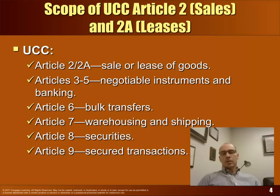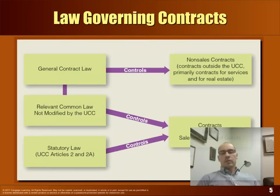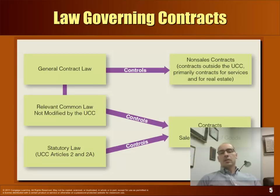The UCC Article 2 and 2A covers the sale and lease of goods. You can see other articles — some of these we will address in other chapters in Business Law 2. We'll talk about negotiable instruments and banking, and securities and secured transactions in Article 9. But we're primarily focused today on Article 2 and 2A. Contracts that don't involve the sale of goods are governed by general contract law, primarily the common law. The UCC governs contracts for the sale of goods, except in areas where the UCC is silent — then we look to the common law or case law.